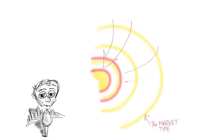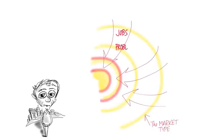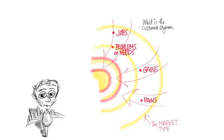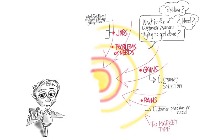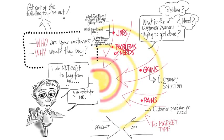In customer segments, you're also looking for three things. One is you are still trying to understand from this side what are the gains, what are the pains, but also what are the jobs the customers want you to do — what are the functional or social jobs, what are the emotional jobs, what are the basic needs that you're going to be solving or problems.